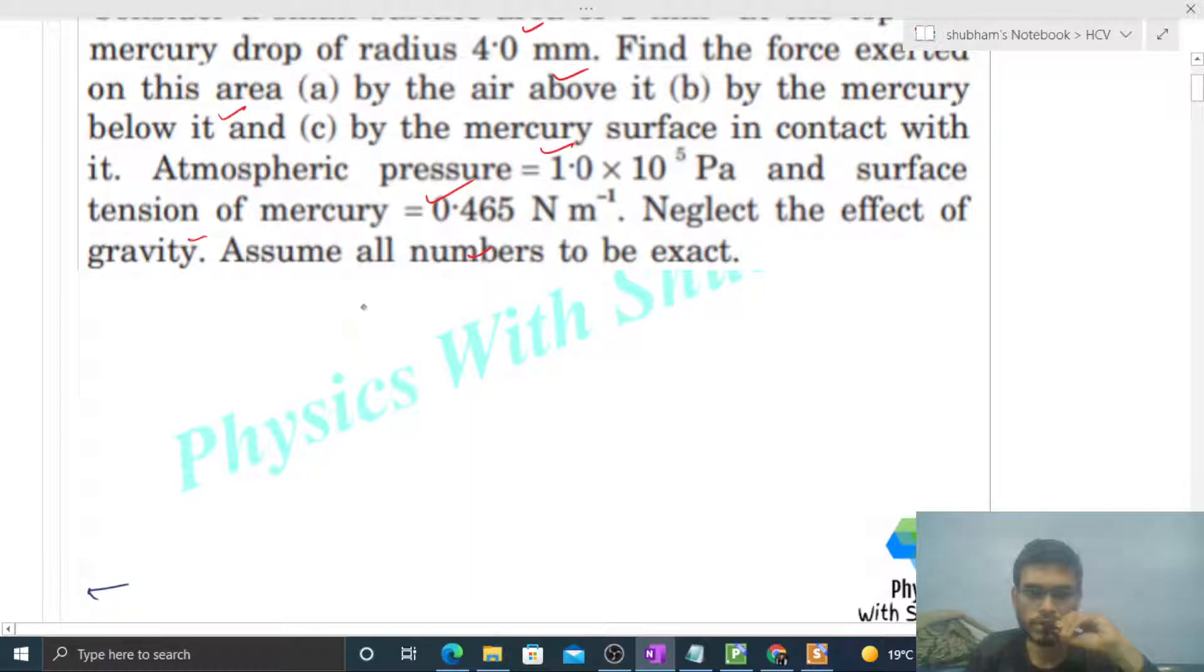So we have a mercury drop with radius 4 mm, and we need to take a small surface area of 1 mm² like this. Now we have to find out the force exerted by air on this area. The outside air present has atmospheric pressure.